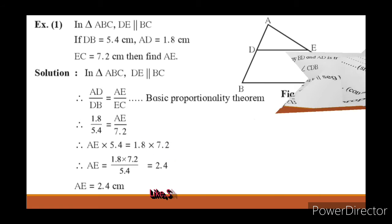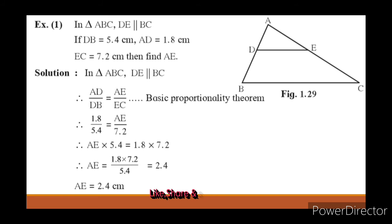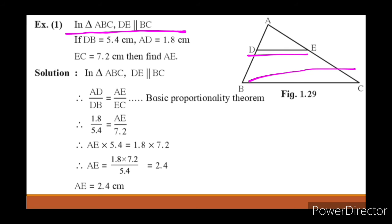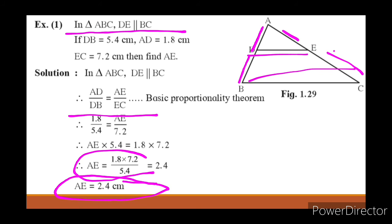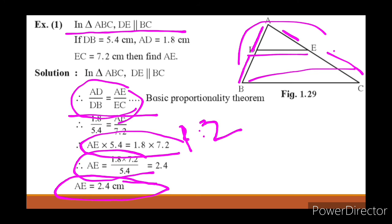Now let's see the next problem — a problem on the basic proportionality theorem. In triangle ABC, DE is parallel to BC. By the basic proportionality theorem we can write AD upon DB equal to AE upon EC. Putting in all the values, we get 1.8 into 7.2 upon 5.4, which gives us a equal to 2.4. You have to try similar problems in practice set 1.2 at home.